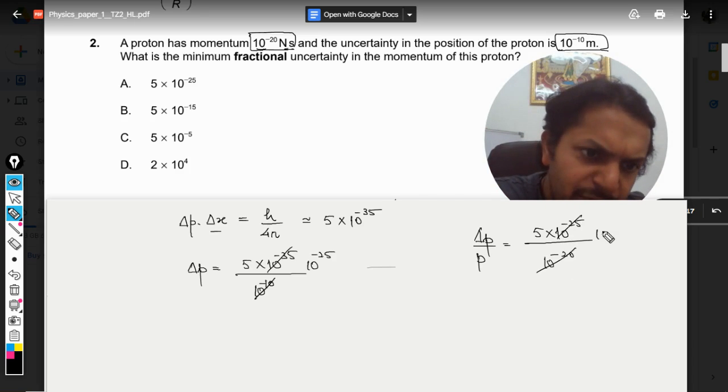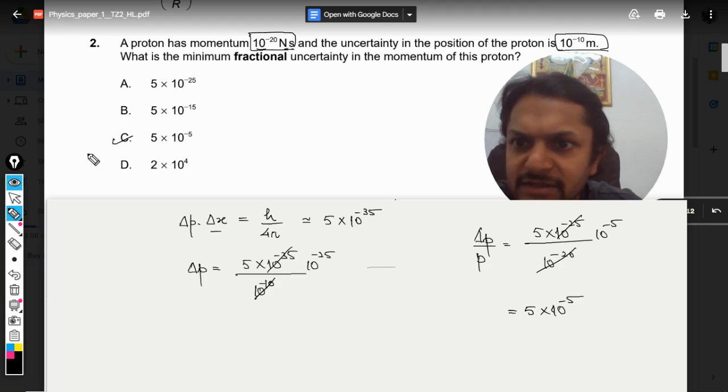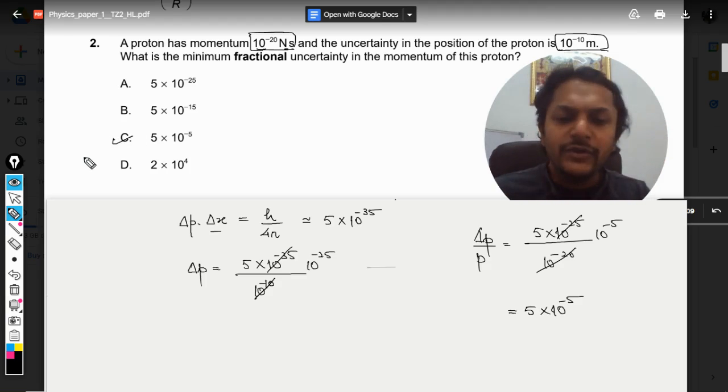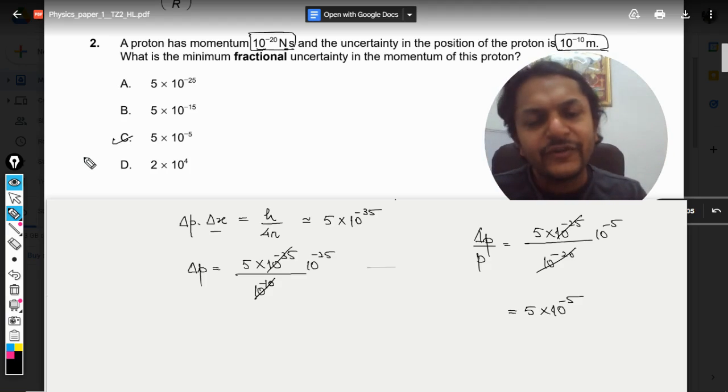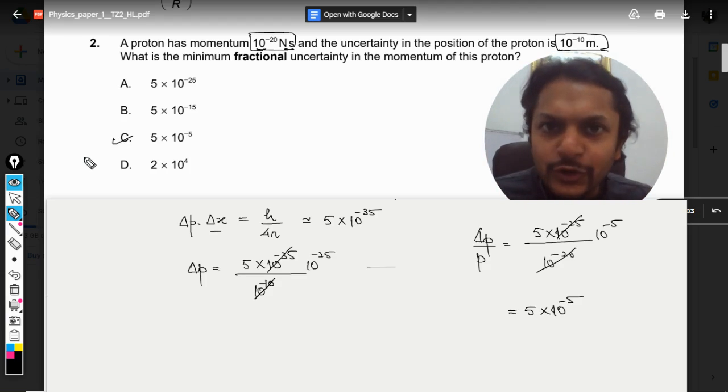So it should come out to be 10^-5, so our answer is C. So this is how we do it using the formula of principle of uncertainty. This is Professor Varun, all the best.